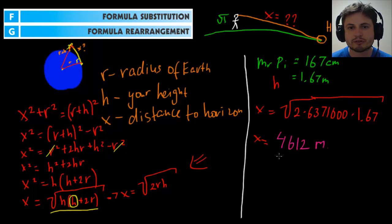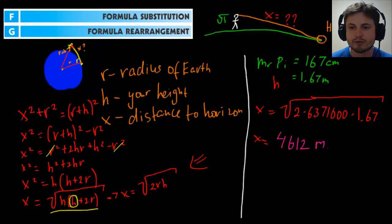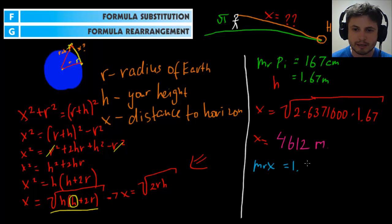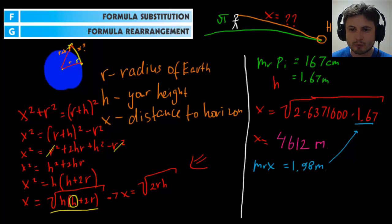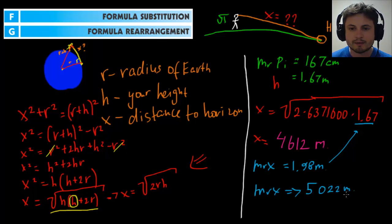Now let's try the same for someone a little bit taller than Mr. Pi. There's another person — let's call him Mr. X — whose height is 198 centimeters, or 1.98 meters. We just change that value in the formula, and the answer is 5,022 meters. In other words, this taller person can see somewhat farther than Mr. Pi — Mr. X can see approximately 5 kilometers, or 5,022 meters. So basically this is how you look for horizon distance using the Pythagorean theorem, formula substitution, and formula rearrangement.